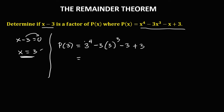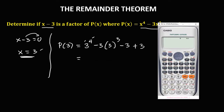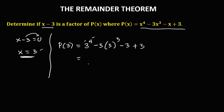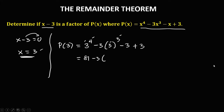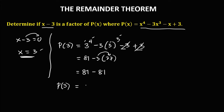Then simplify. 3 to the power 4 is 81. Then minus 3 times 3 to the power 3 — that's 27 — so minus 3 times 27, which is 81. Then negative 3 plus 3 is 0. So we have 81 minus 81 plus 0. Therefore p of 3 is equal to 0.